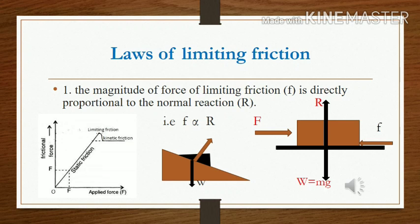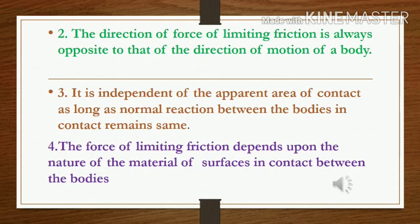The second law of limiting friction states that the direction of the force of limiting friction is always opposed to the direction of motion of the body. As discussed in the previous lecture, every type of friction — whether static, limiting, or kinetic — is always opposed to the motion of the body. If a body is moving to the right, the frictional force acts to the left. Note that friction is opposed to the direction of motion, though it may or may not be directly opposed to the applied force.